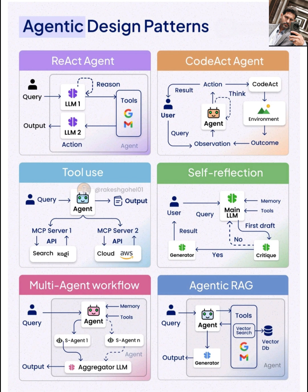Finally, we have agentic RAG. We touched on RAG — retrieval augmented generation — in a previous video, and here it's applied within an agentic framework. The agent takes a query, uses tools, often involving vector search in a vector database, to retrieve relevant information, and then uses a generator, like an LLM, to formulate the final output.